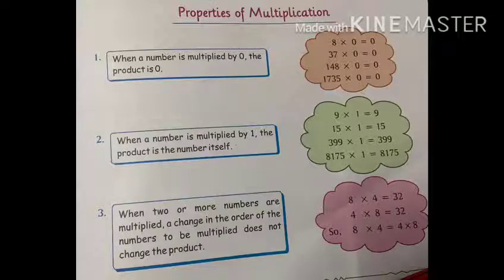In multiplication, you should know that if we multiply any number, any huge number by 0, we get 0 as the answer. You can see in the examples that 8 0s are 0, 37 0s are 0, 148 multiplied by 0 is also 0, and 1735 multiplied by 0, the product will be 0. This is the first property of multiplication.